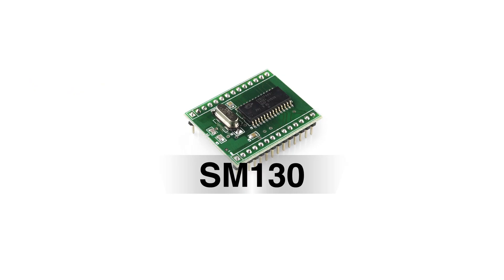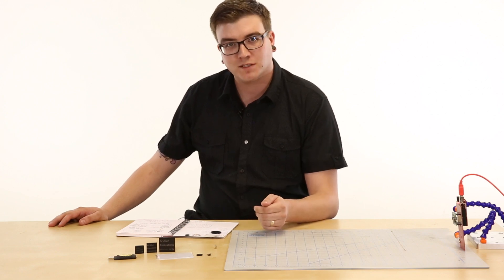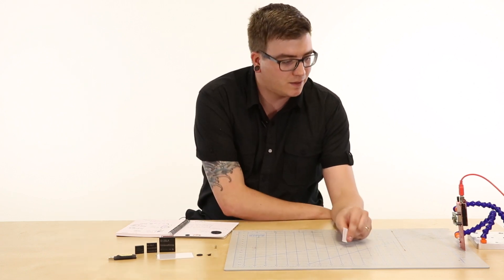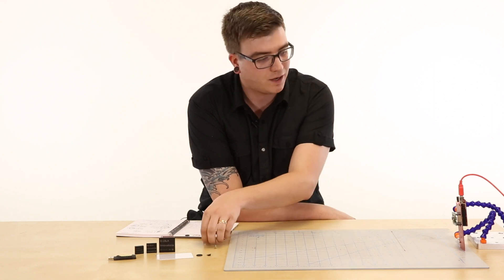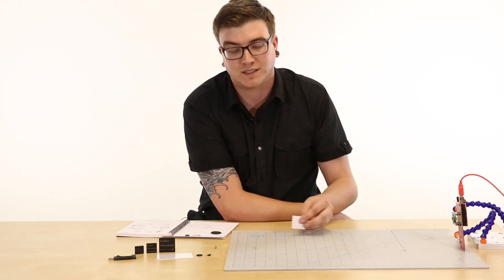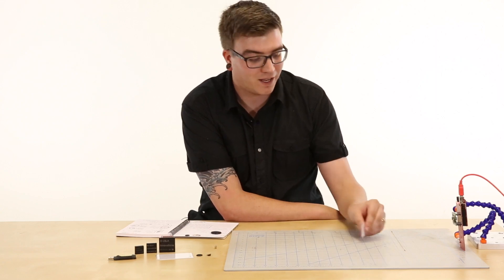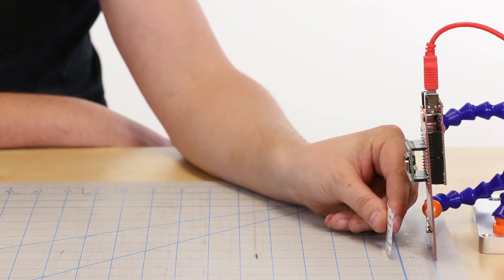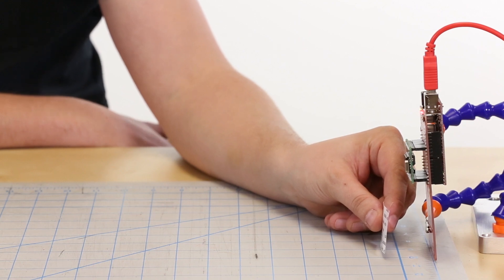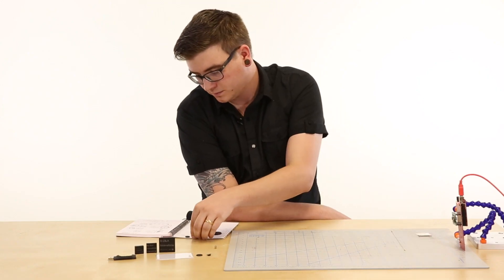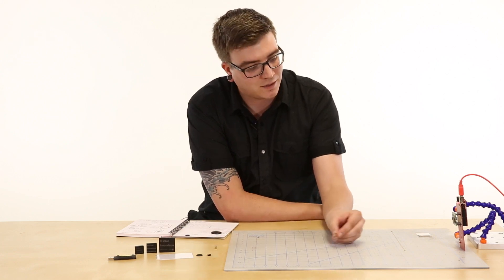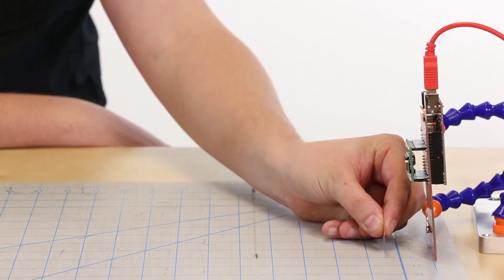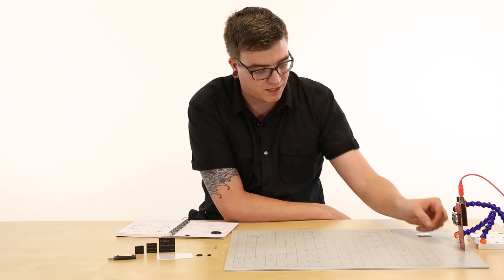First up, we're going to take a look at the SM130 and range test the four options for tags that we currently carry here at SparkFun. We'll start with our adhesive tag. For the SM130 on this breakout, we have an LED that's going to light up when there is a read actually present. So let's see how far of a range we get. We're getting a good solid read at about one inch, one and a quarter inches out of the adhesive tag. Next up is our transparent tag. We're getting a little more range but very comparable to the adhesive tag.